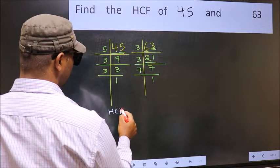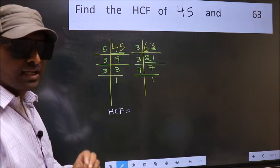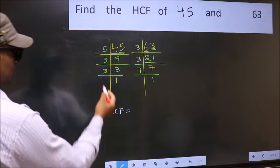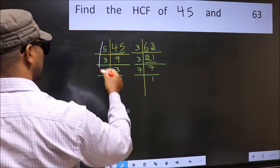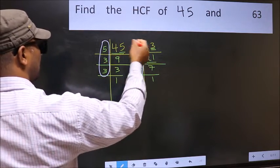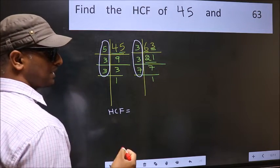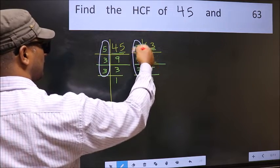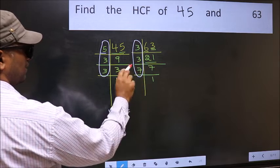Therefore, our HCF is the product of the numbers which should be present in these two places. So now let us find the numbers which should be present here and here. Starting with the number 5. Do we have 5 here? No.